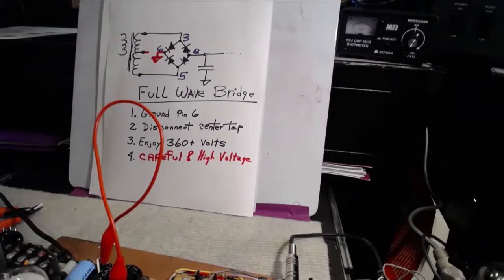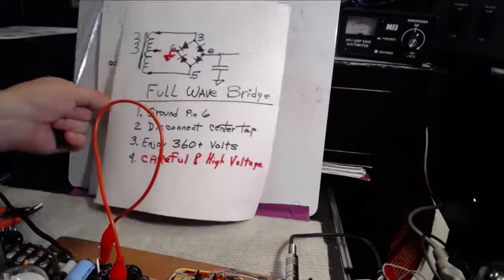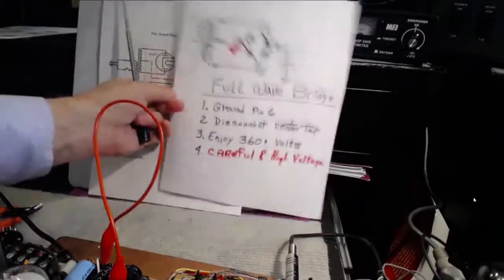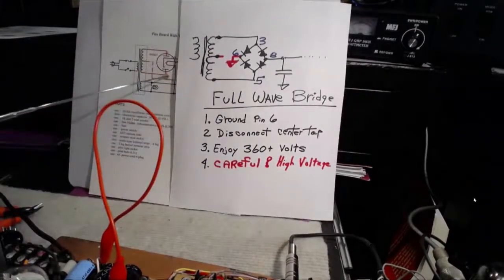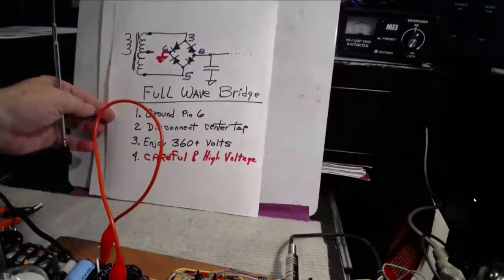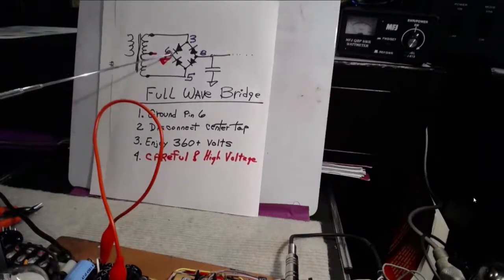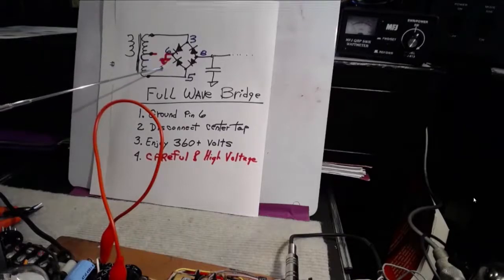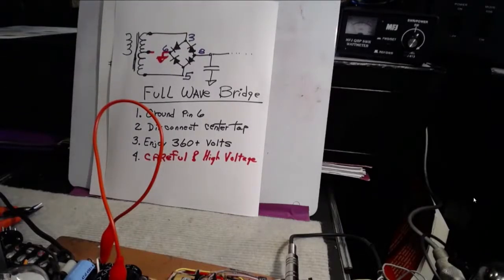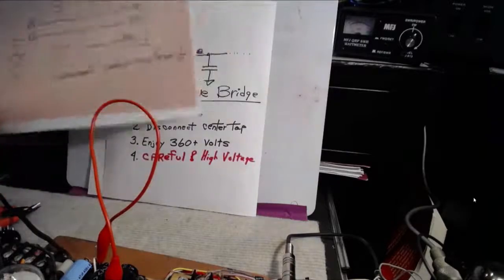First of all, we're going to remove the tube. Now, the pinouts on that tube, as we know from the drawing, and of course the tube socket itself, pin 6 is open. It's not used. The first thing we're going to do is ground pin 6. Just ground it. That's what you have to do.